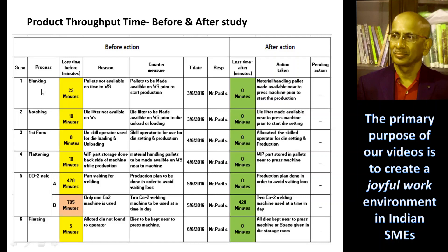Column two is: blanking, then notching, first forming, then flattening, then there is a CO2 weld A and B, and lost time — before lost time, after, and most of the lost time up to zero.